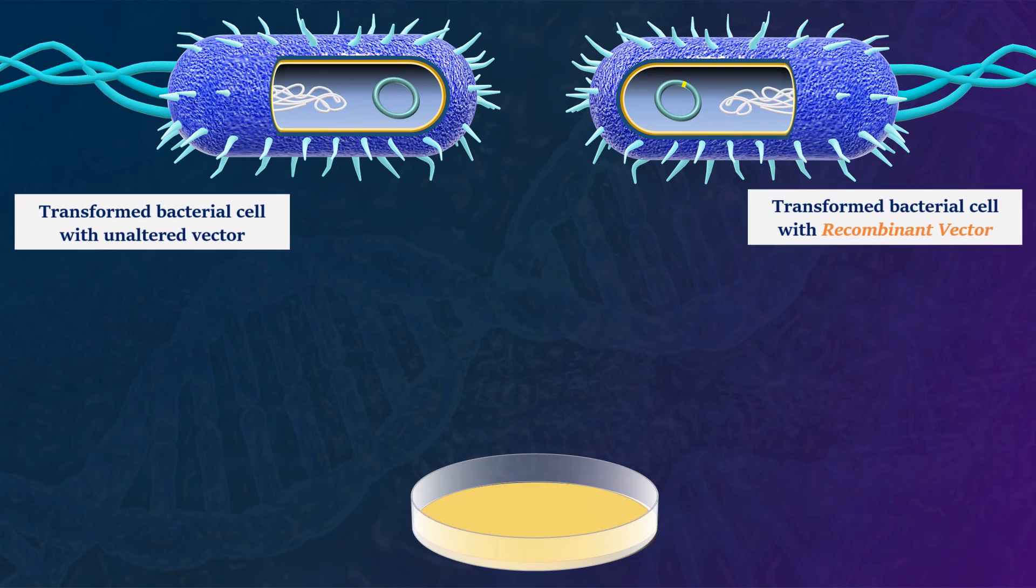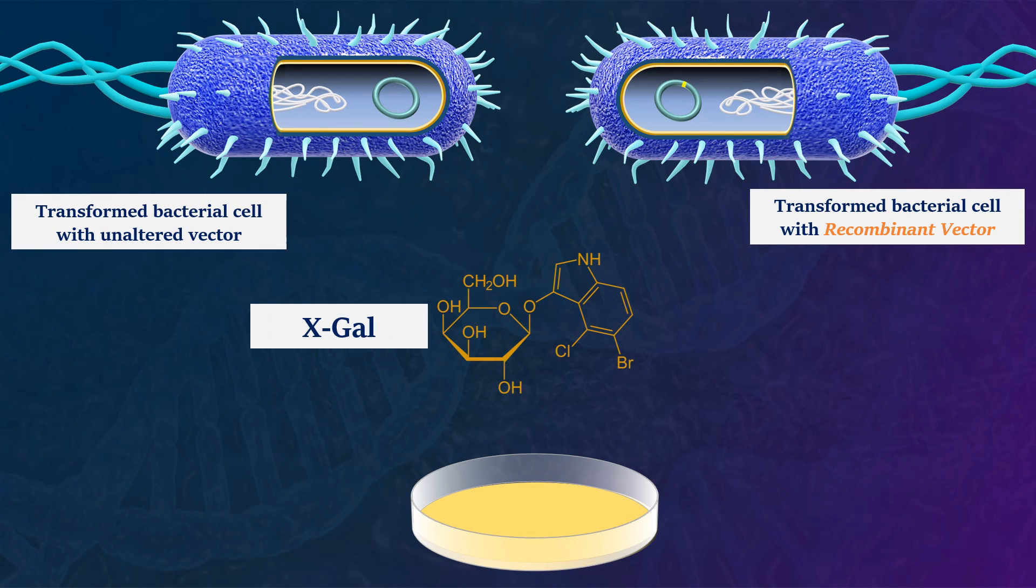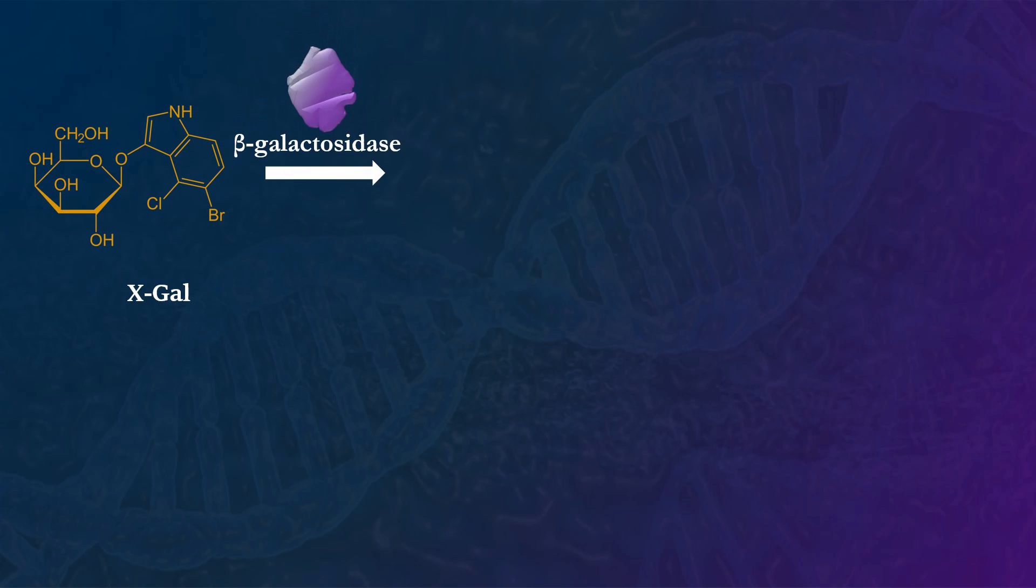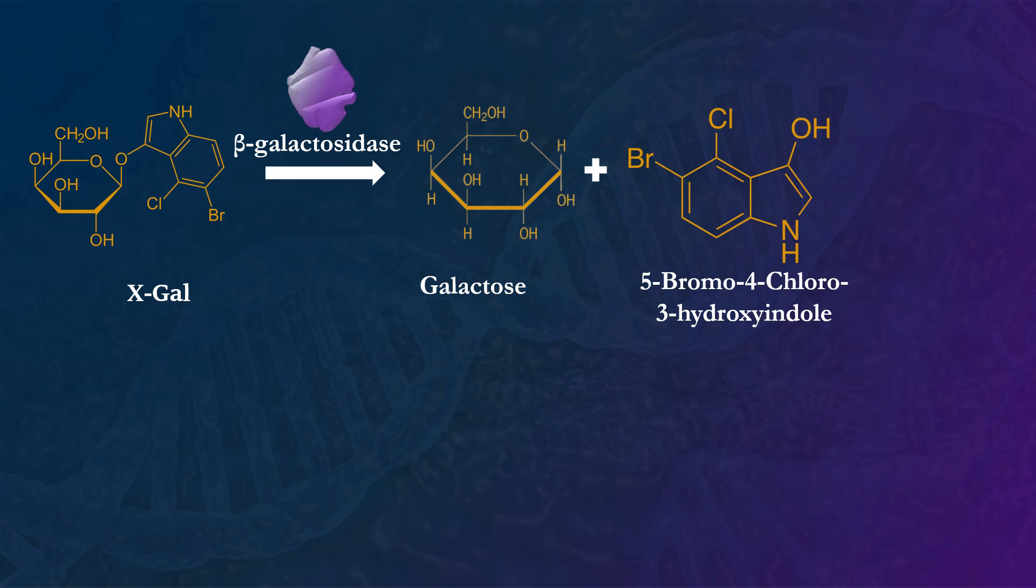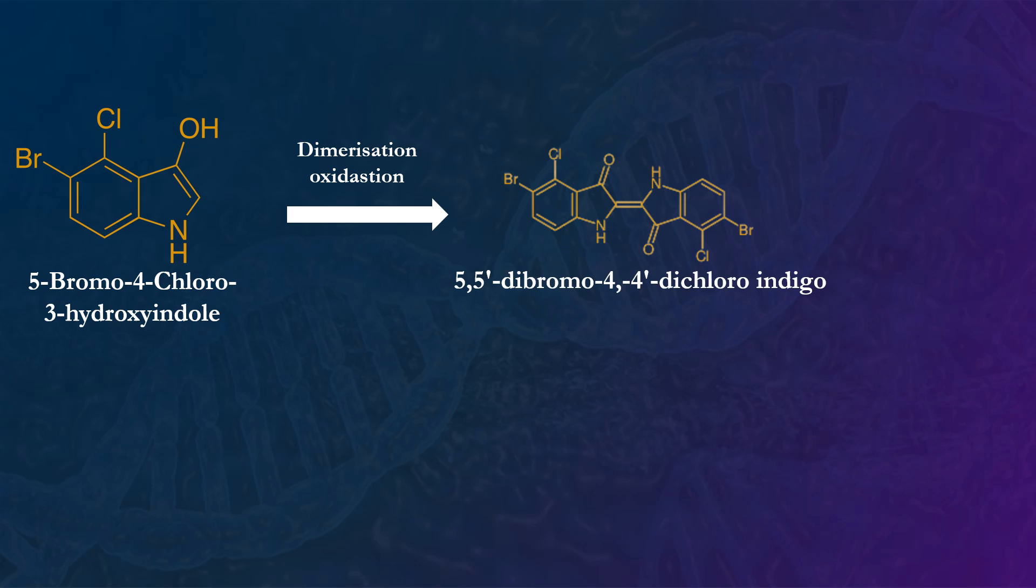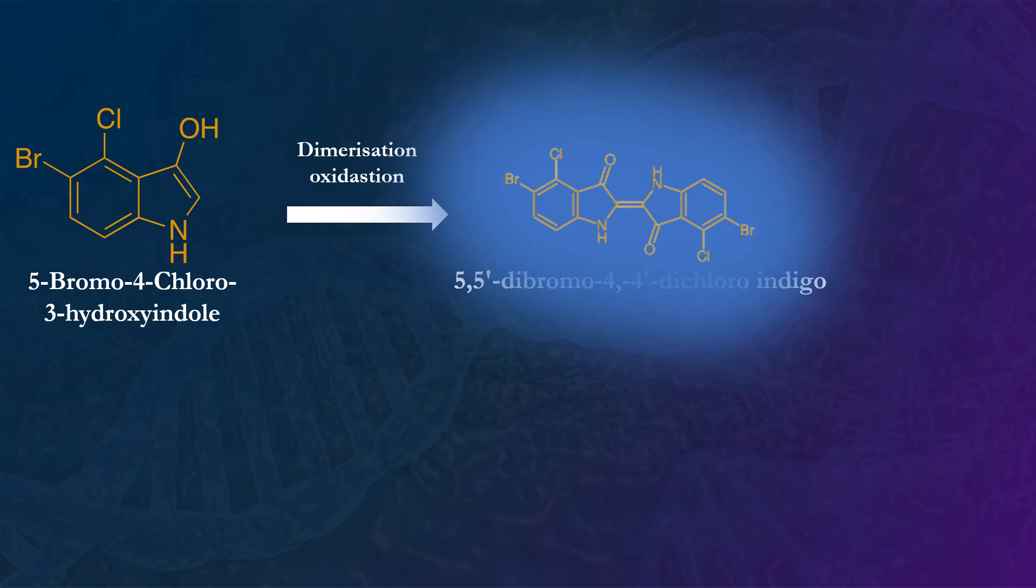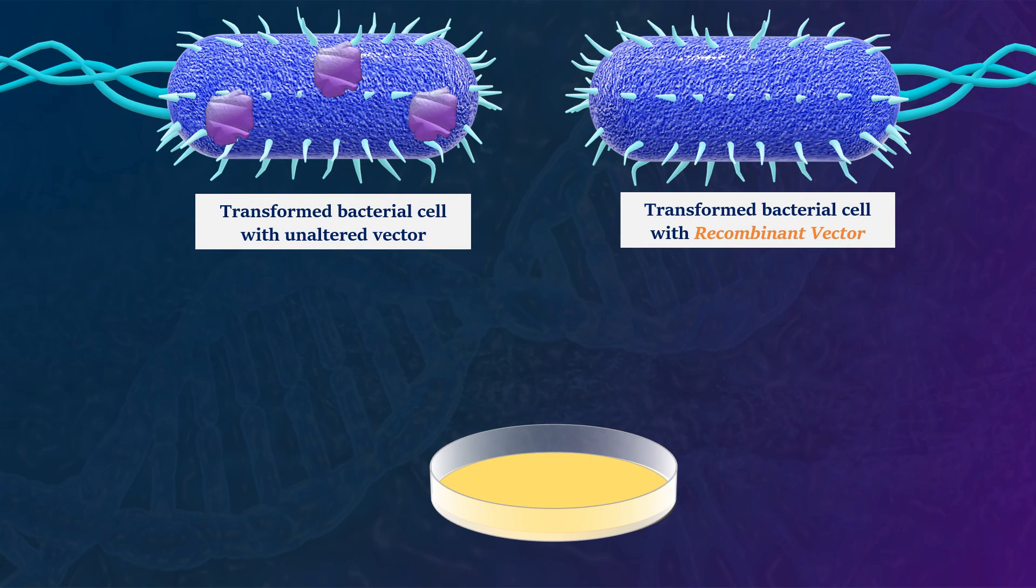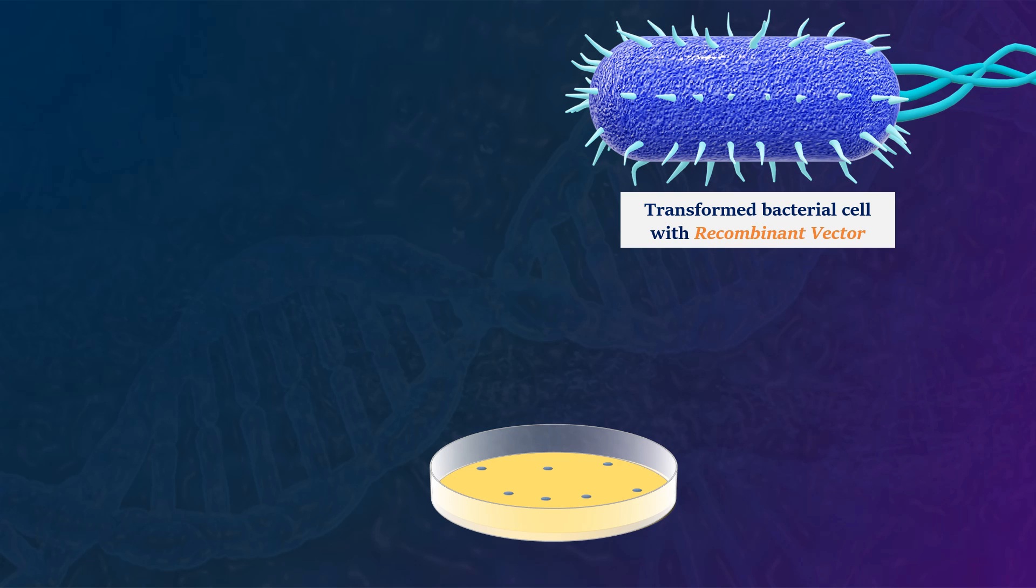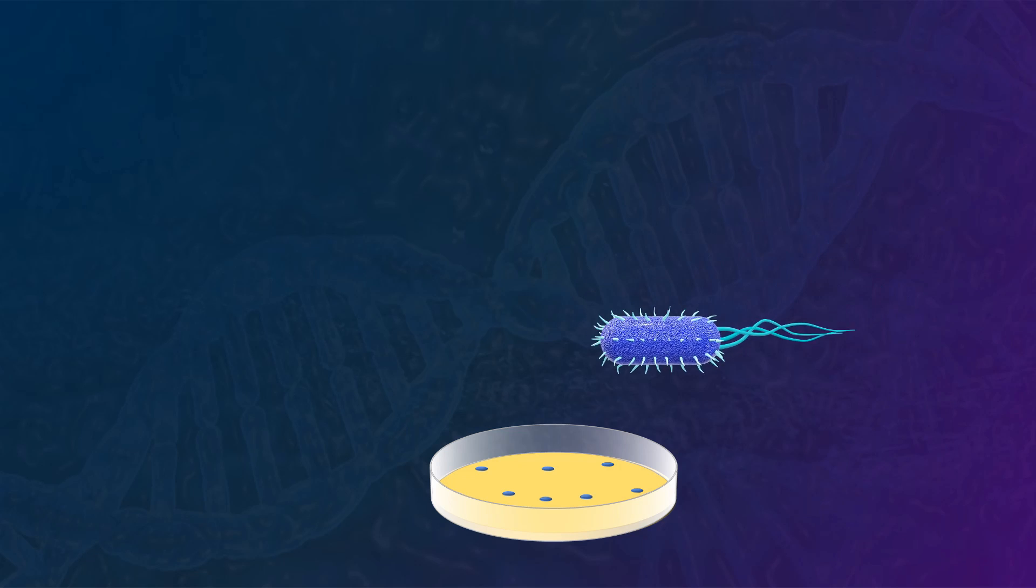In the culture medium, X-gal substrate is included for visual indication. The beta-galactacidase enzyme initiates a cleavage reaction on the X-gal substrate, releasing colorless galactis and 5-bromo-4-chloro-3-indoxyl. The indoxyl undergoes oxidation and dimerization, forming an insoluble product that leads to the development of an intense blue precipitate. So, the transformed bacterial cells with unaltered vectors will manifest as blue colonies on the culture medium. On the other hand, the transformed bacterial cells with the recombinant vector, which are not capable of producing beta-galactacidase, will appear as white colonies.